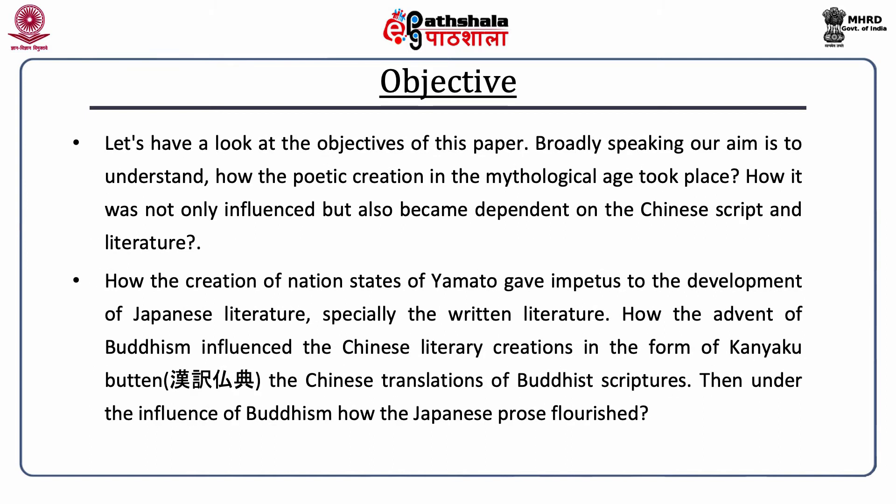Let's look at the objectives of this paper. Broadly speaking, our aim is to understand how the poetic creation in the mythological age took place and how it was influenced by the Chinese script and literature. How the creation of nation states of Yamato gave impetus to the development of Japanese literature, especially the written literature. How the advent of Buddhism influenced literary creations in the form of Kanyaku Butten, which means the Chinese translations of Buddhist scriptures.